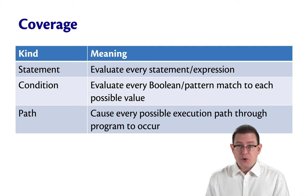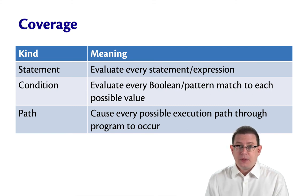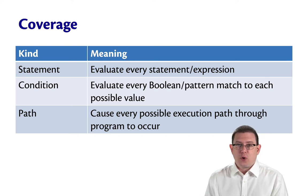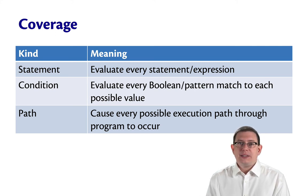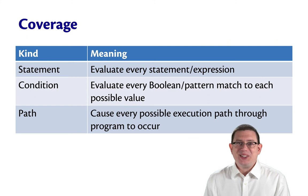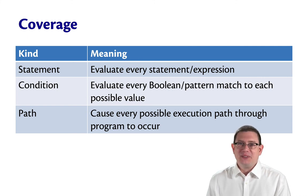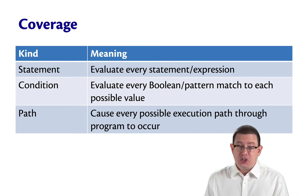Path coverage is even finer-grained still. With path coverage, you want to cause every possible execution path through the program to occur. It's not just enough to evaluate every possible branch at least once — for every sub-branch that's part of it, you want to explore all the paths through it as well. Path coverage is therefore quite difficult to achieve.